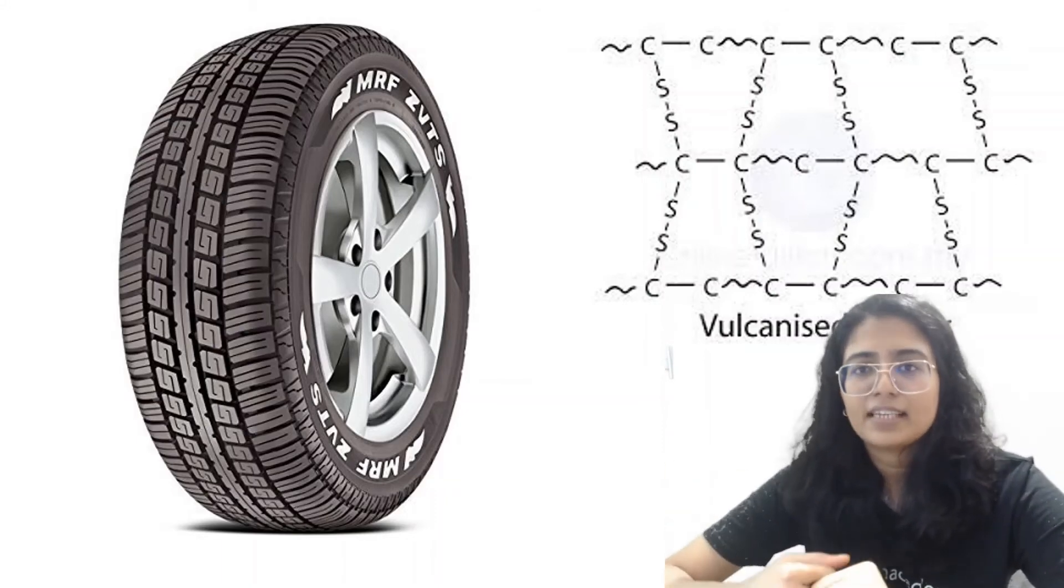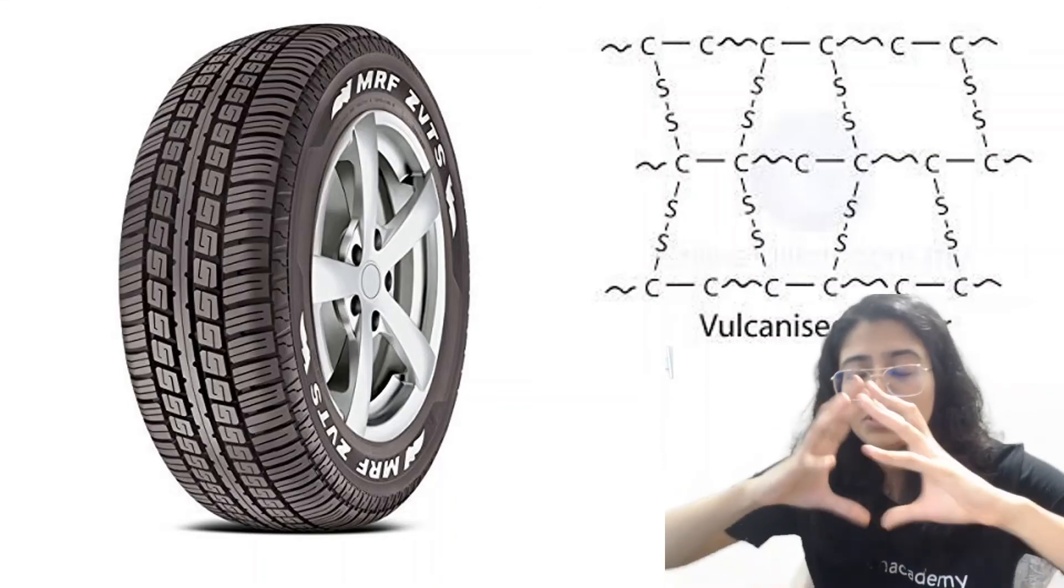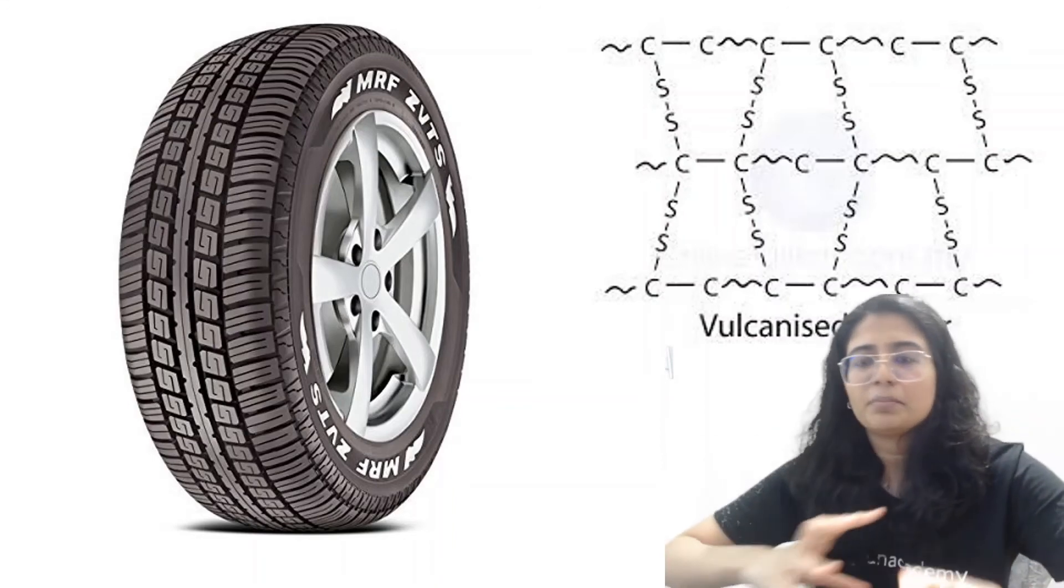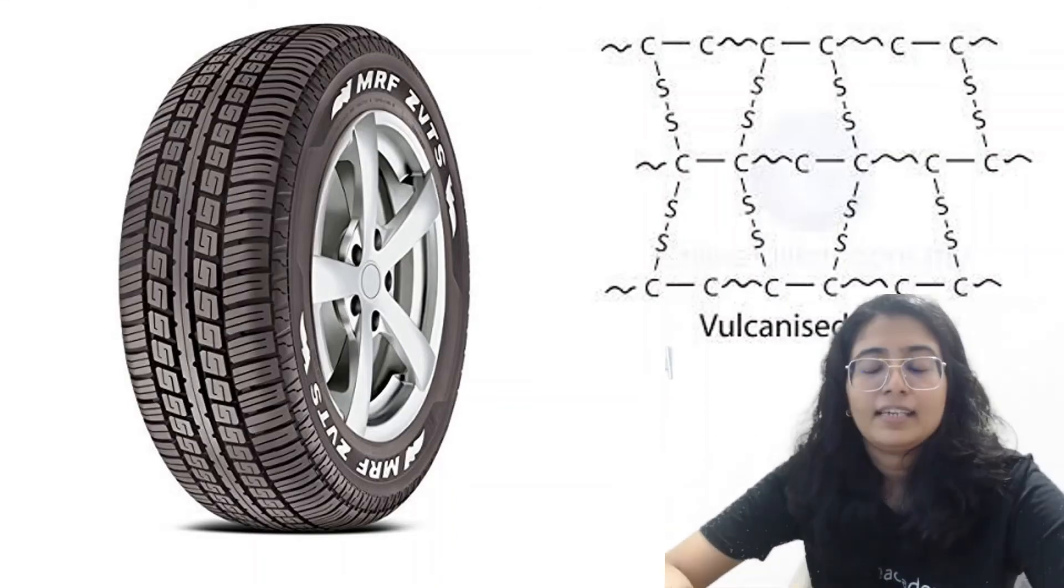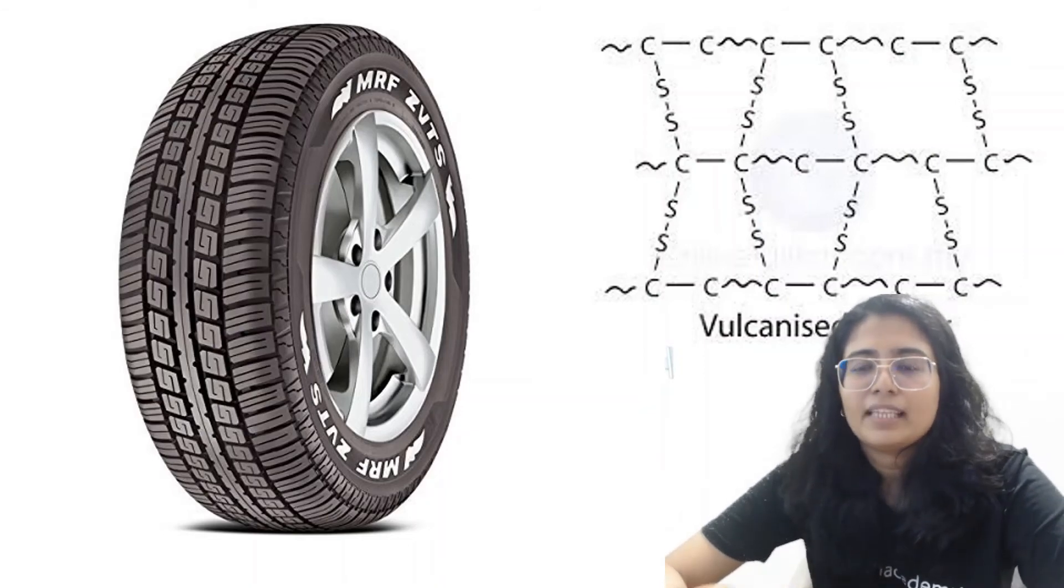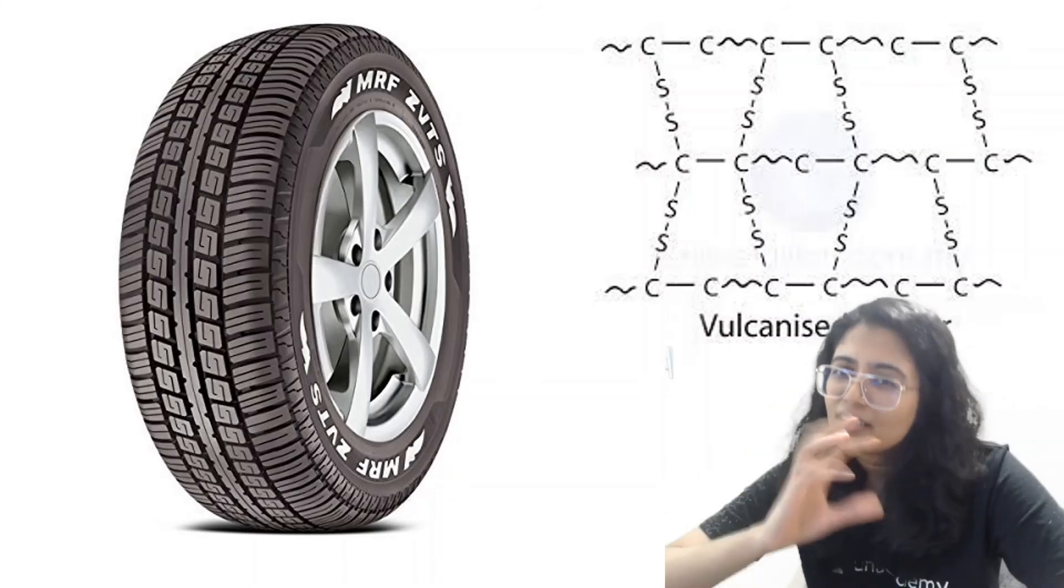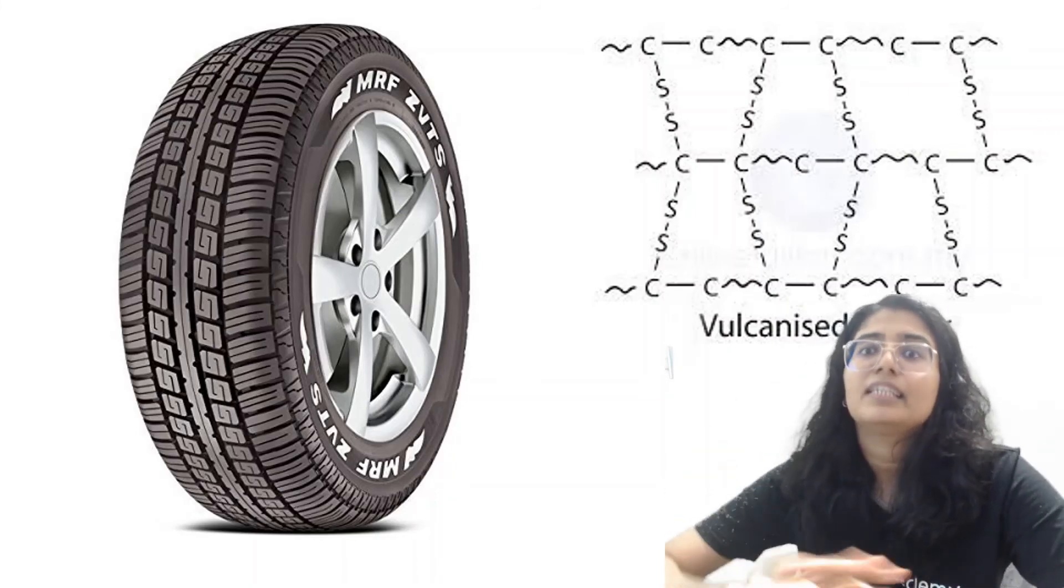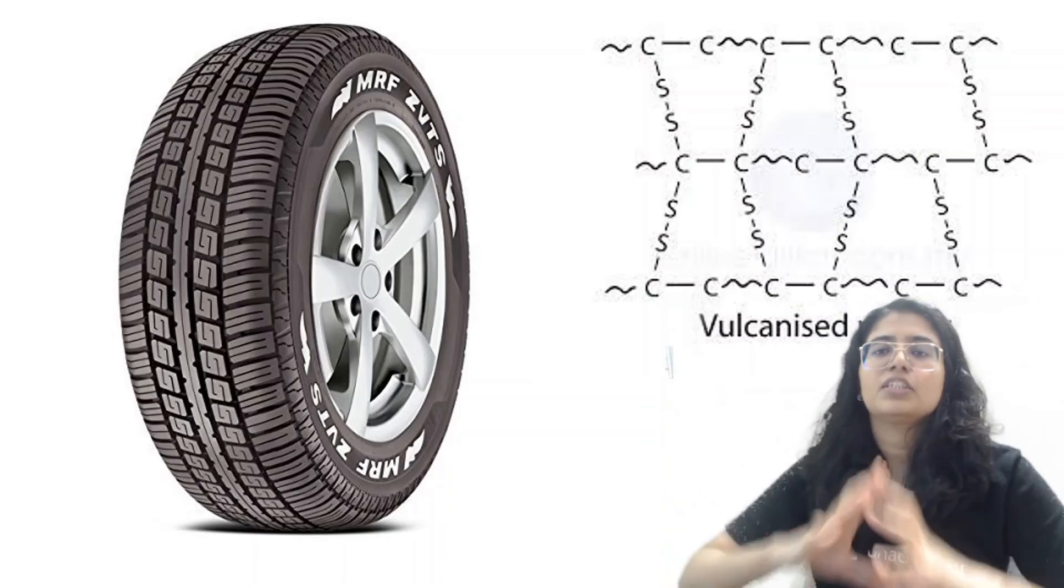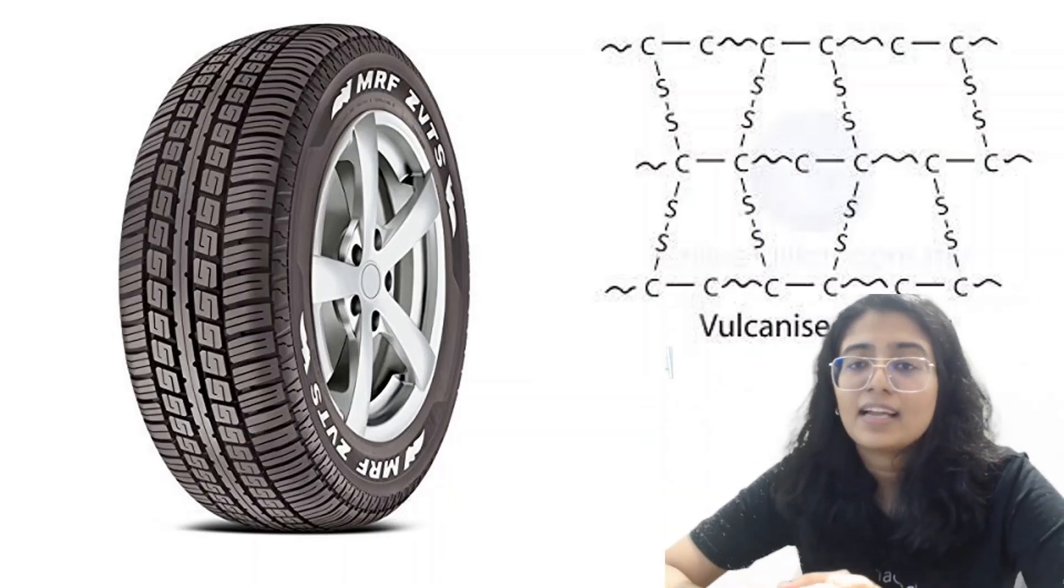But where does it get that strength from? Because of the chain, it is a huge chain and all of them provide so much strength to each other and they are all connected by these covalent bonds through the cross linking which is why it is not just a normal large molecule, it is a macro molecule. It is a huge polymer molecule and that is quite amazing.